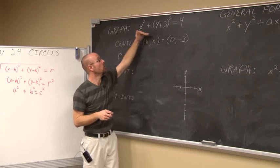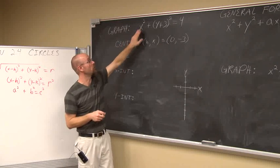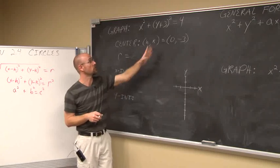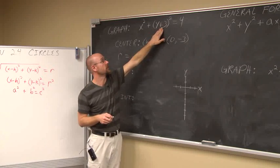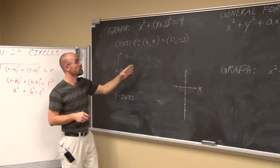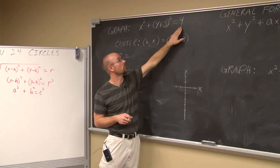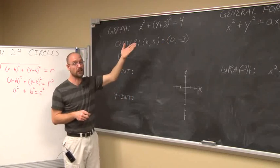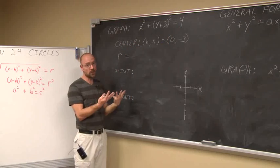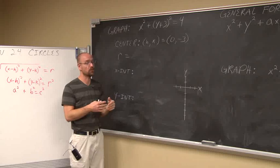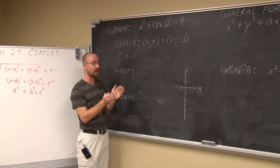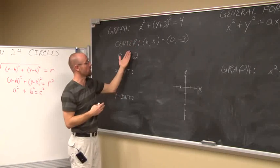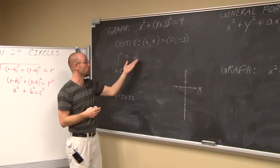That's how we determine the center when a circle is in standard form — we ask what's being subtracted from x and from y, always taking the opposite of what we see. Now for the radius: we look at what the equation is set equal to. That value is the radius squared, so I take the square root. When we introduce square roots we think plus or minus, but since radius is a distance, we only take the positive value. The square root of 4 is 2, so the radius is 2.